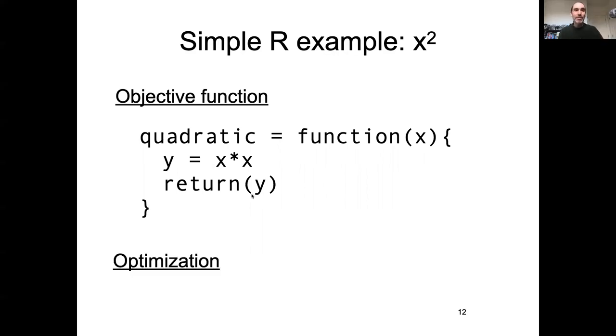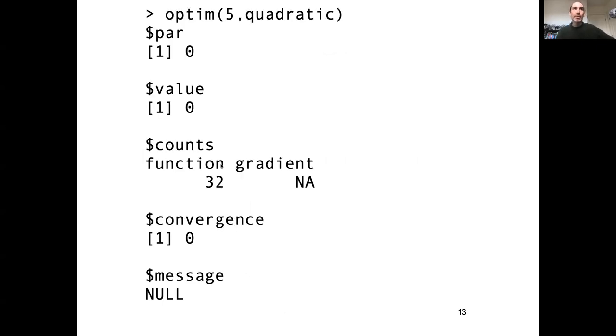To optimize that, we could pass it into an optimization algorithm such as optim, where we give an initial guess in the name of the function. And same as what we did in Maximum Likelihood, it would then go through and numerically look for the value that minimizes that function.